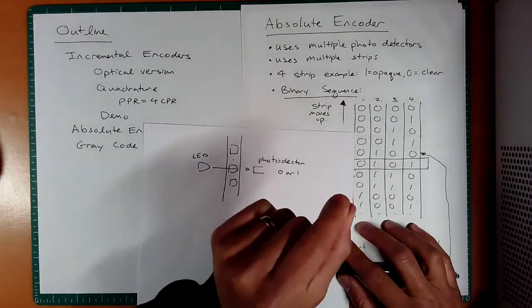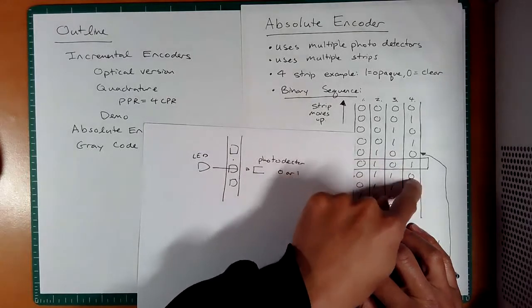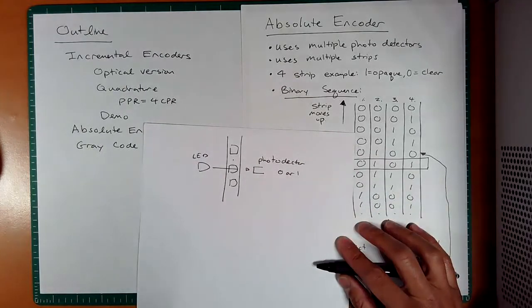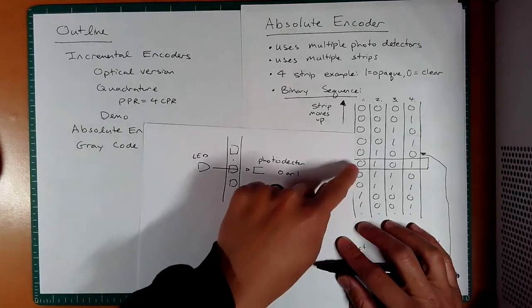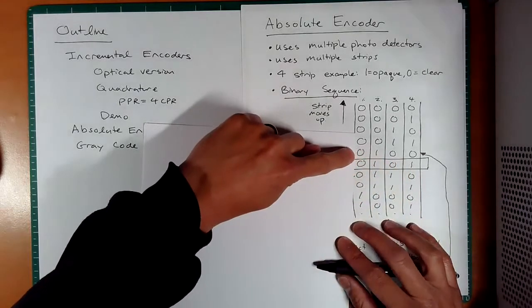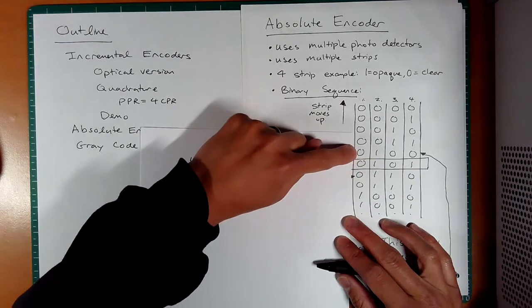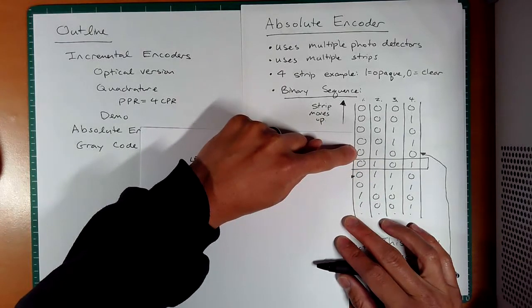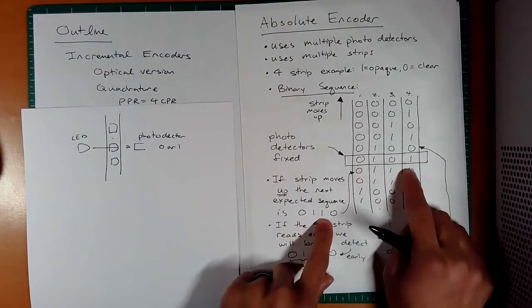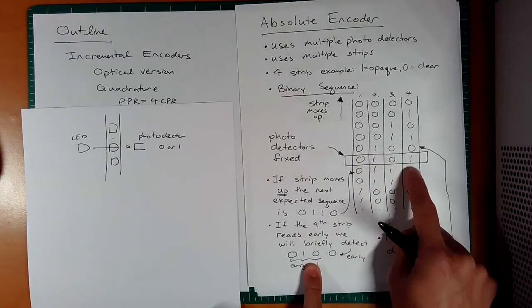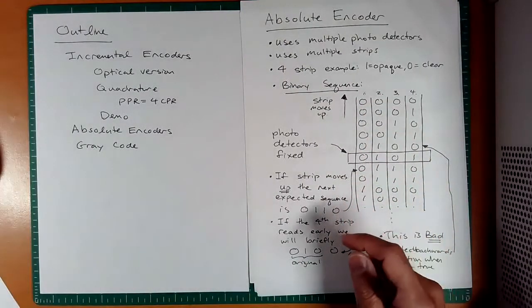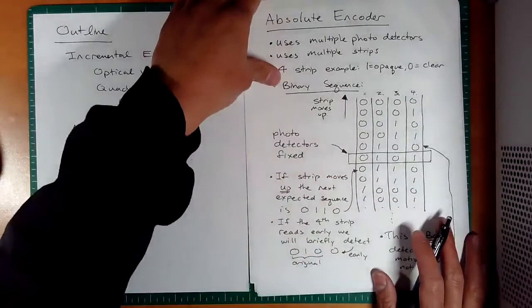I would very briefly read zero, one, zero, zero, and then I would read zero, one, one, zero. I wonder if you guys can see where that would be a problem. If I very briefly read zero, one, zero, zero before I read the expected value, you can imagine that the computer will think that we actually went backwards for a brief moment and then went forwards. That is bad. Zero, one, one, zero is expected. If you briefly see zero, one, zero, zero, that's thinking it went backwards, and so this is bad. A binary sequence is not a good sequence for an absolute encoder.